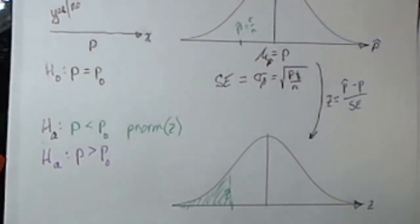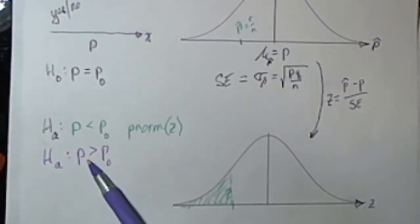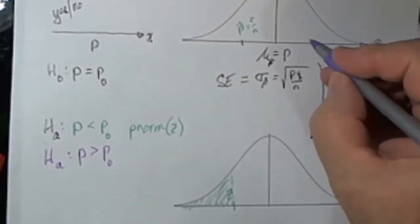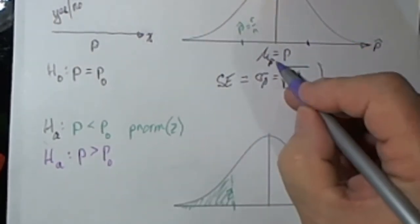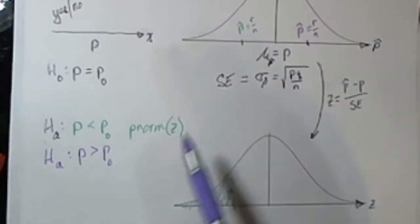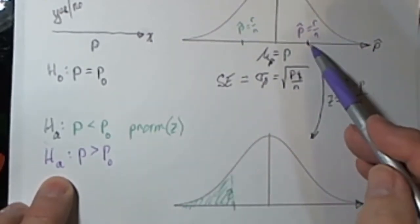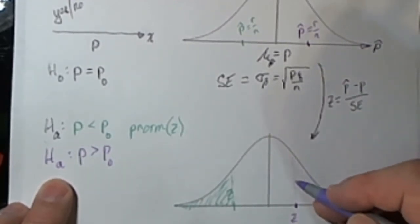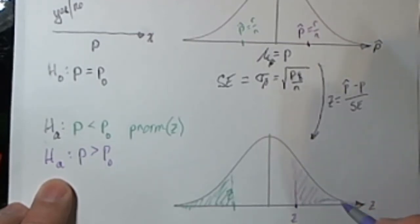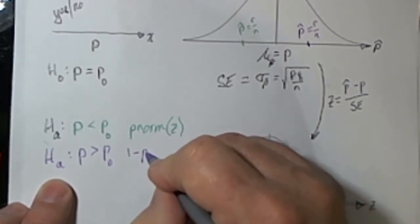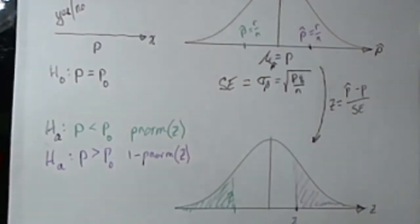The second form that an alternative hypothesis might take is that p is going to be greater than the value that the null hypothesis is claiming. In that case, our p-hat generally will end up to the right of p. When that gets converted, the z-value becomes a positive value. When we're interested in finding the p-value, that's going to be the area to the right of this, and you know how to calculate that in R — it's going to be 1 minus the pnorm of z.